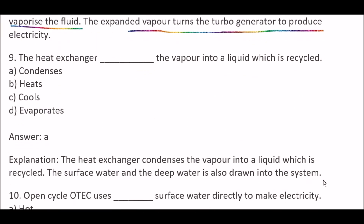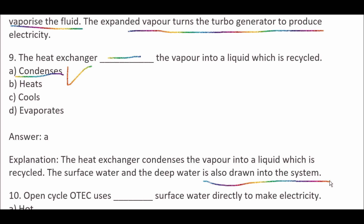Next question: The heat exchanger blank the vapor into a liquid, which is recycled — Option A, condenses; Option B, heats; Option C, cools; Option D, evaporates. Right answer is Option A, condenses. The heat exchanger condenses the vapor into a liquid, which is recycled. The surface water and the deep water are also drawn into the system.